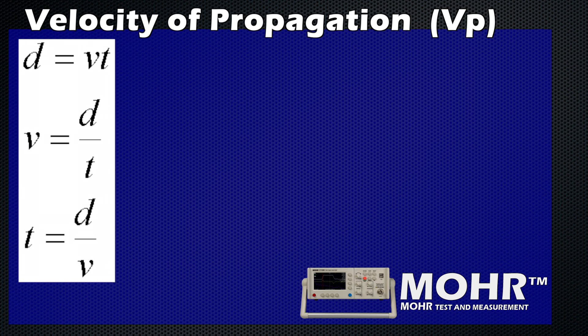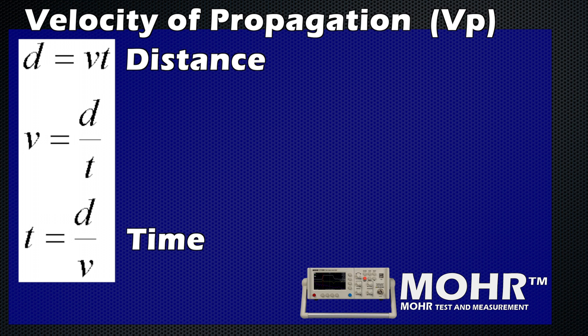An important note: a TDR measures in time — the time it takes to get to the measurement and back. And this is how we come up with the equation of distance over time equals velocity of propagation, or VP equals D over T.